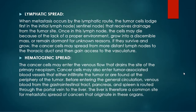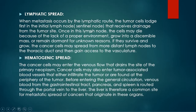Lymphatic spread occurs via lymph vessels while hematogenic spread occurs via blood vessels. When metastasis occurs by the lymphatic route, the tumor cells first lodge in the initial lymph node that receives drainage from the tumor site. This first lymph node is termed the sentinel lymph node. Once in this node, the cells may either die due to lack of a proper environment or grow into a discernible mass.